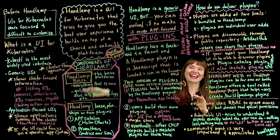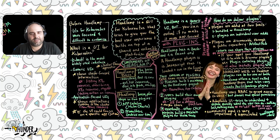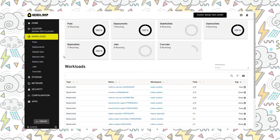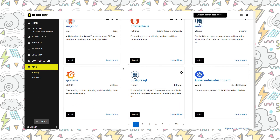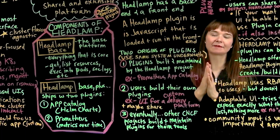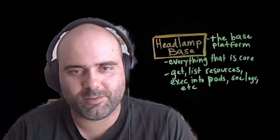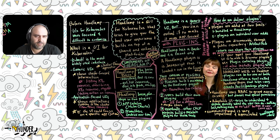So your application-focused UI might be focused on a single application or on how lots of applications interact with each other. So now with all of that context, let's finally get into what headlamp is. Headlamp is a graphical UI for Kubernetes. It tries to give you the best user experience. It's built on top of a shared and extensible platform. To kick it off, you went into how there are two components of headlamp. Initially we had headlamp, which showed you the UI for the Kubernetes resources. It lists all the resources in your cluster, allows you to go deeper into one of them to see all those details, related pods, allows you to execute into a pod, to see the logs and all of that.